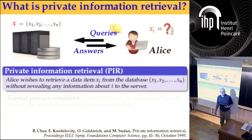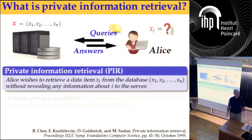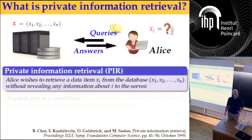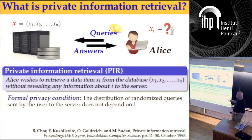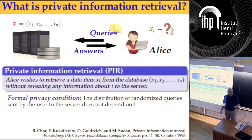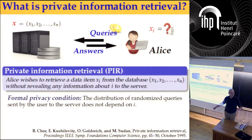The user does not want to reveal to the server which item the user wants — that's the privacy. Formally, this condition could be phrased like this: the user will send queries to the server; these queries will be randomized using some random coins that the user flips, and we require that the distribution of these queries does not depend on the index i of x sub i.